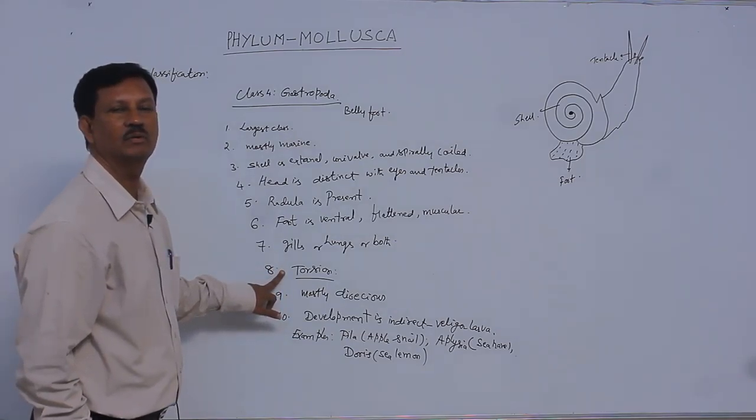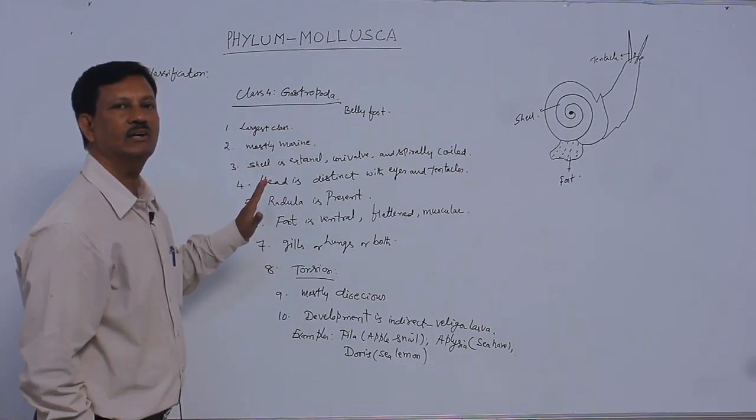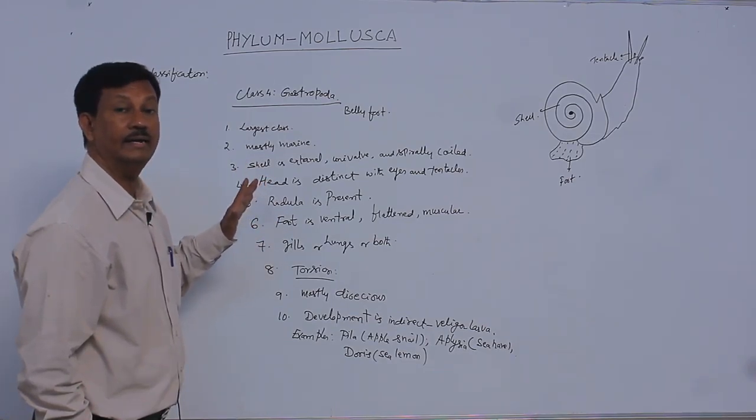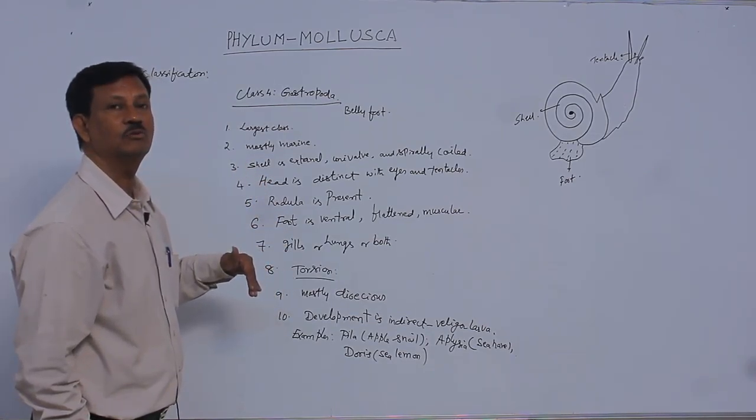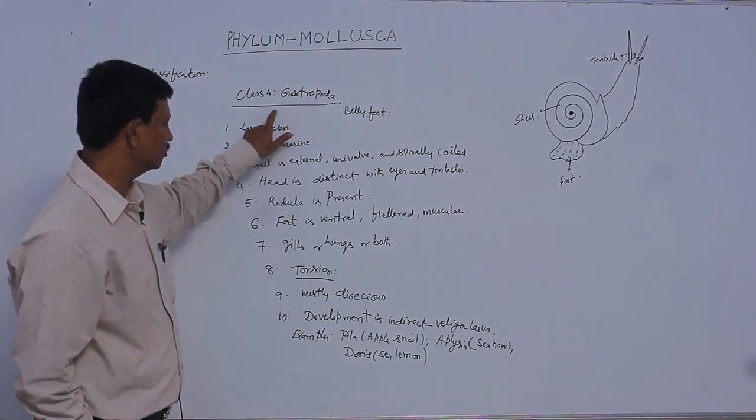Torsion is also developed in these animals. During body development, one side of the organs becomes enormously developed and shows 180 degrees rotation. That's why torsion is present in Gastropoda.